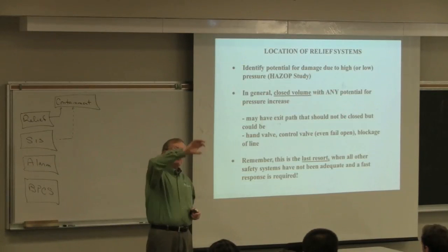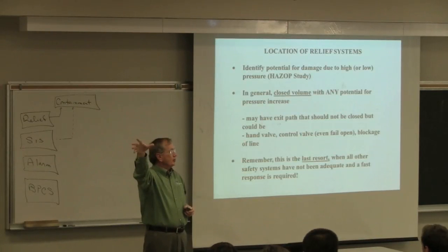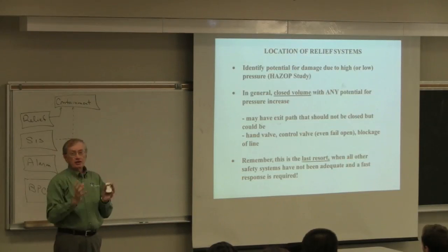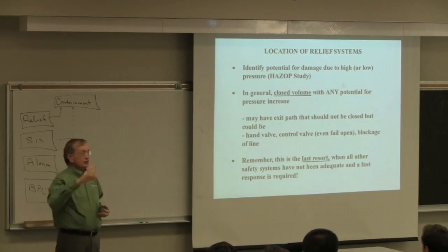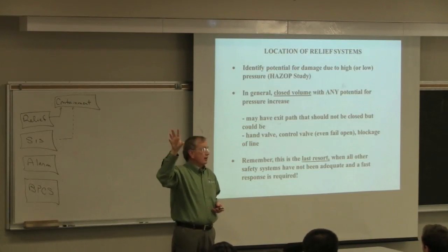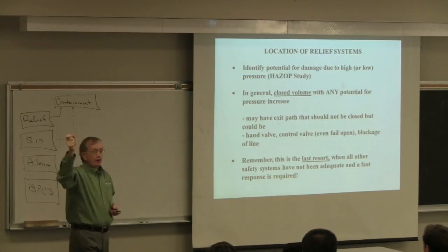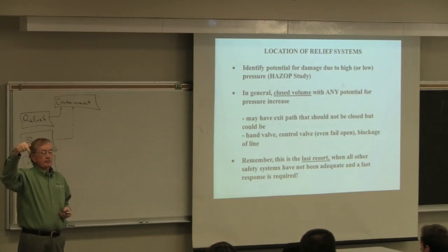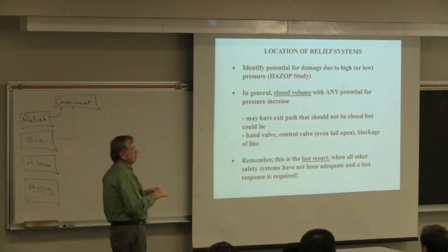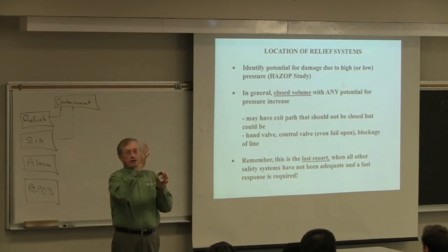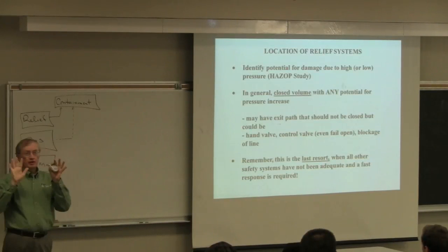If there's a pipe coming out of a vessel and there's a valve, even with a big sign saying 'don't close this valve,' that sign doesn't count—somebody can close it. Even a fail-open control valve doesn't exempt the vessel, because the control system can fail. The only exception is if two vessels are connected by a large-diameter pipe with no restrictions—then you can put pressure relief on one and not the other. If there's any potential restriction in that pipe, you must put pressure relief on both vessels.